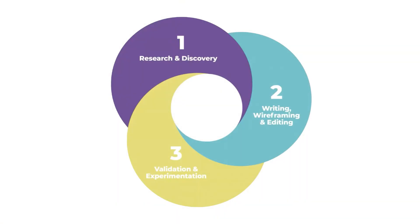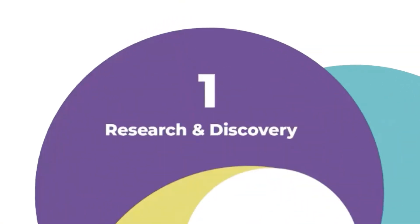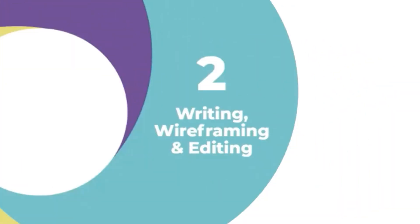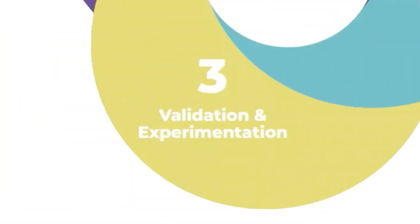Which brings us to this very important part of the course: the conversion copywriting process. This is a simple three-part process. Part one is research and discovery — this is where you go out and listen to what your customers and prospects have to say. Part two is writing, which includes drafting, editing, and even wireframing if the copy isn't flowing in a single column — basically, if you're writing anything that isn't an ad or an email, you'll lightly wireframe your copy, like when you're writing a webpage. Part three is validation and experimentation.